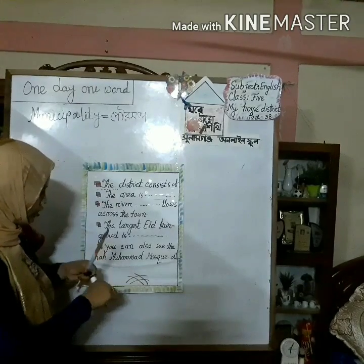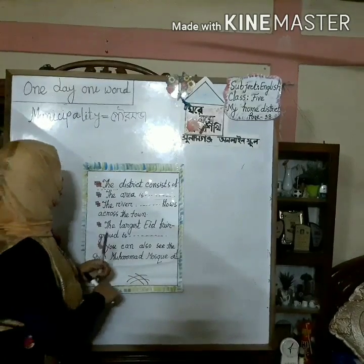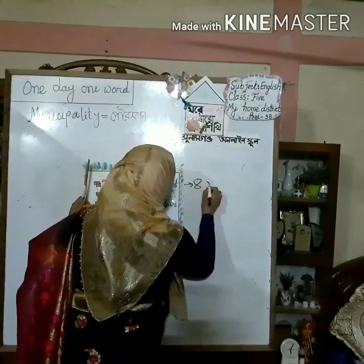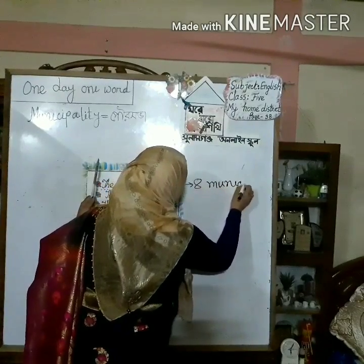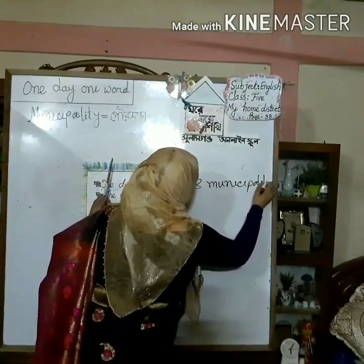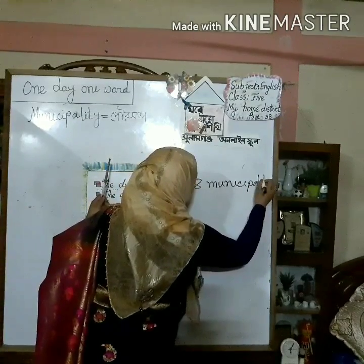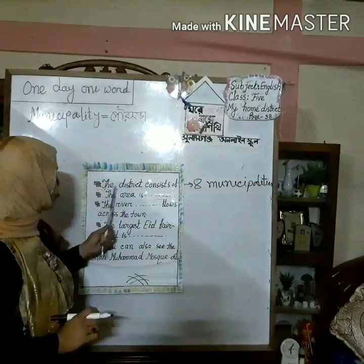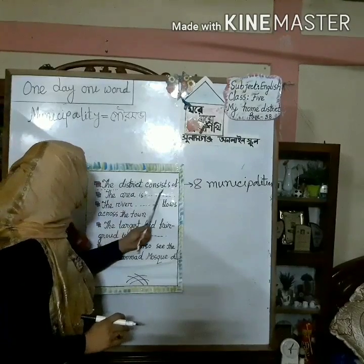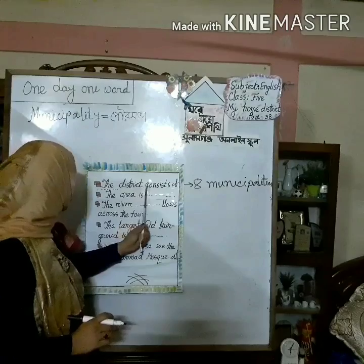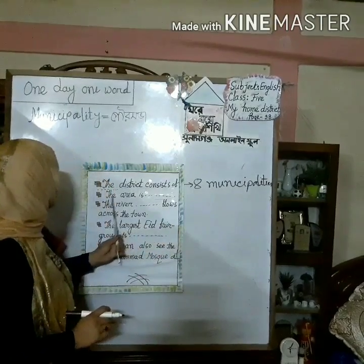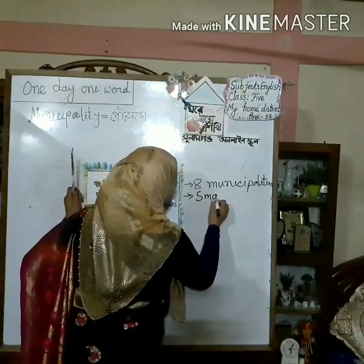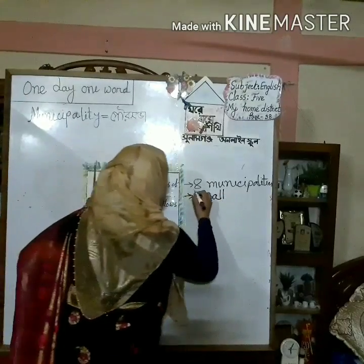Now I will answer the fill-in-the-gaps. Number one: The district consists of eight municipalities. Number two: The area is small.